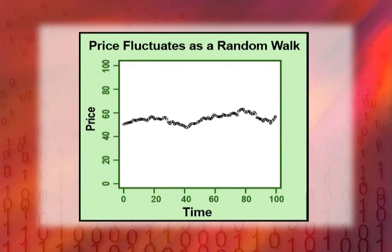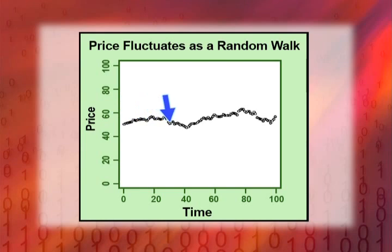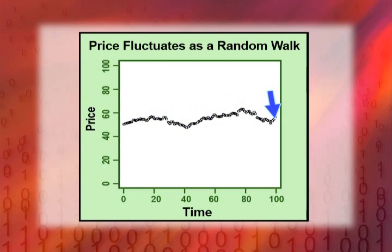Here we have some examples of simulations of such price fluctuations based on just a random walk. This is an example where the price started at a certain stage, and you can see that it randomly oscillates up a little, down a little, up and down. This would be a typical example of the future price of a stock under Bachelier's model.